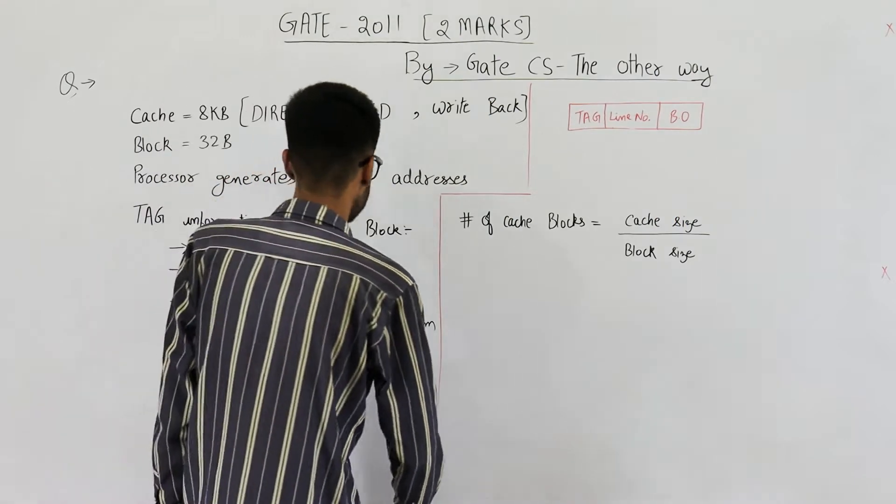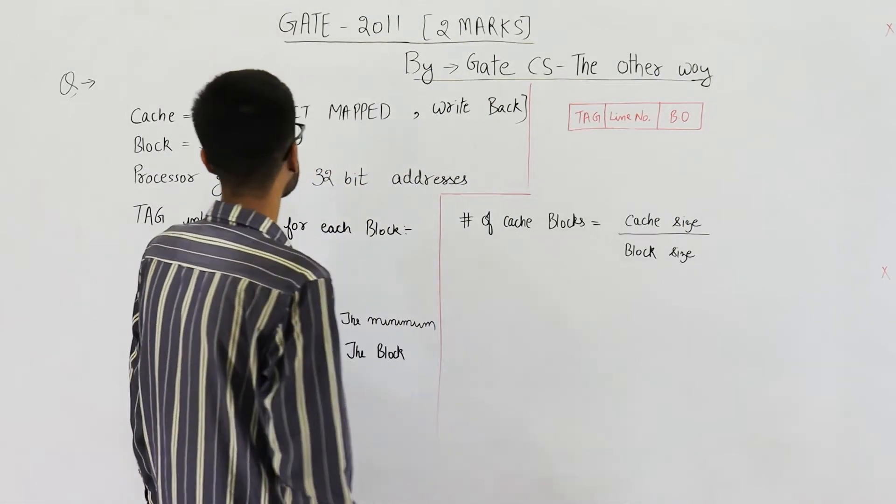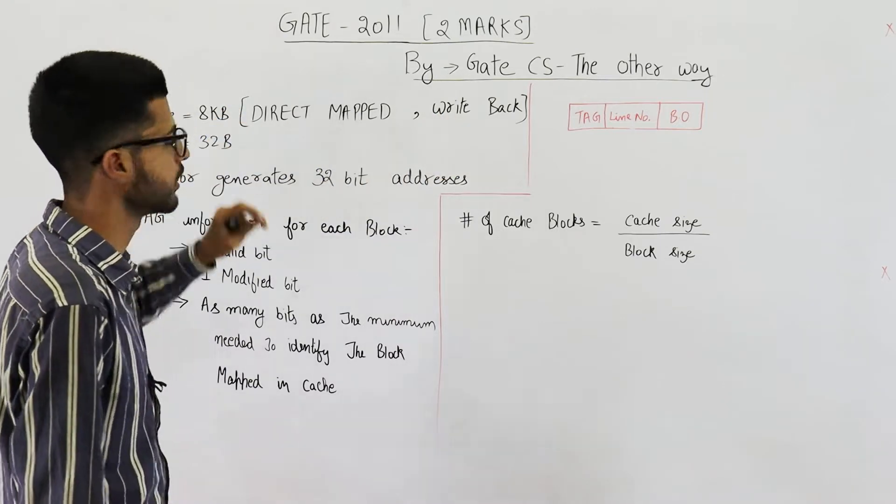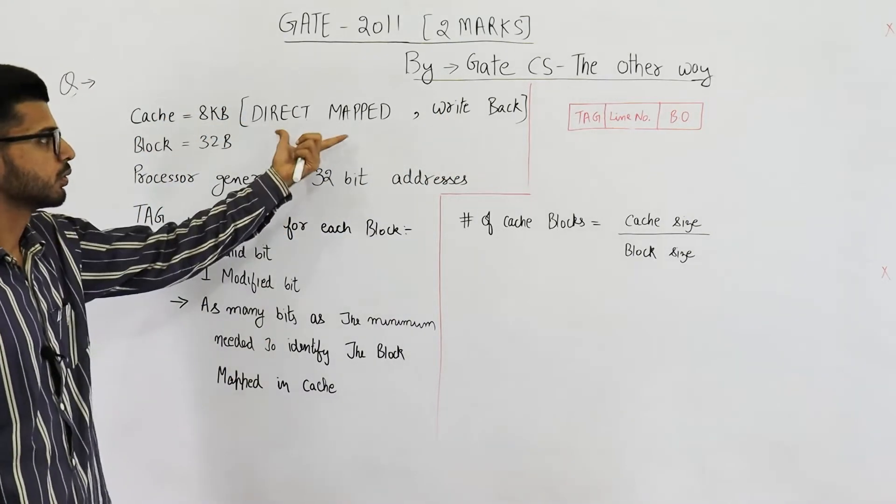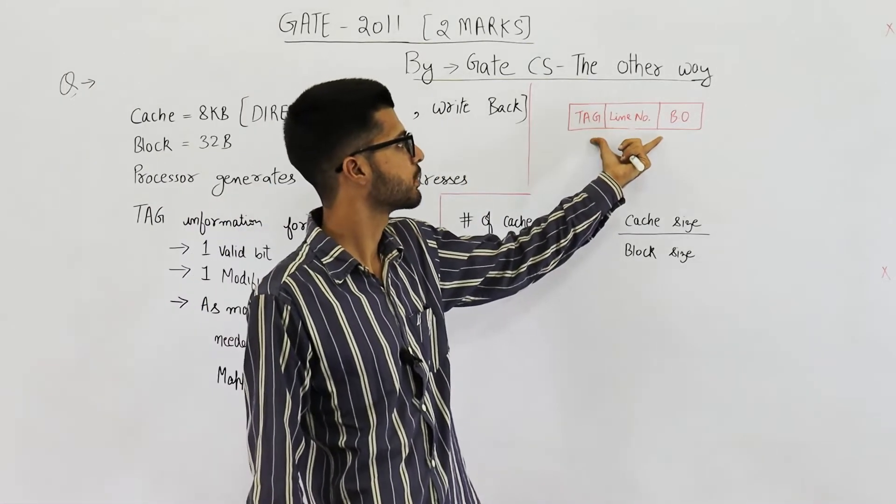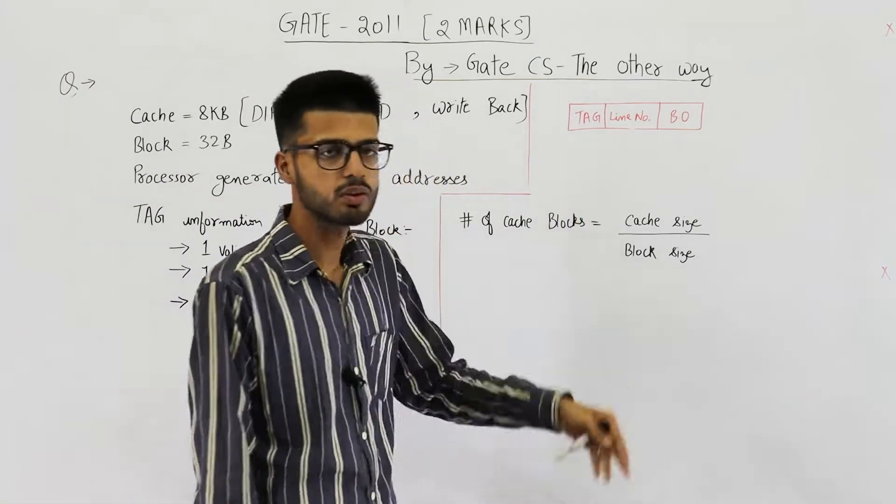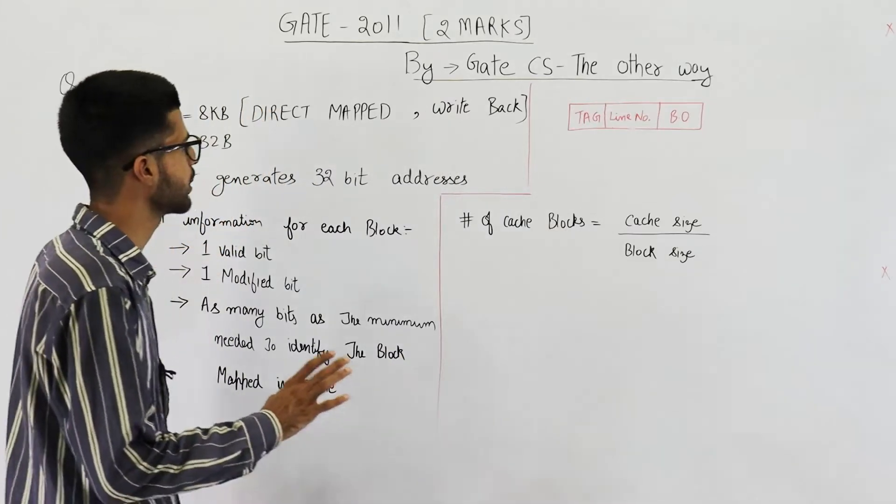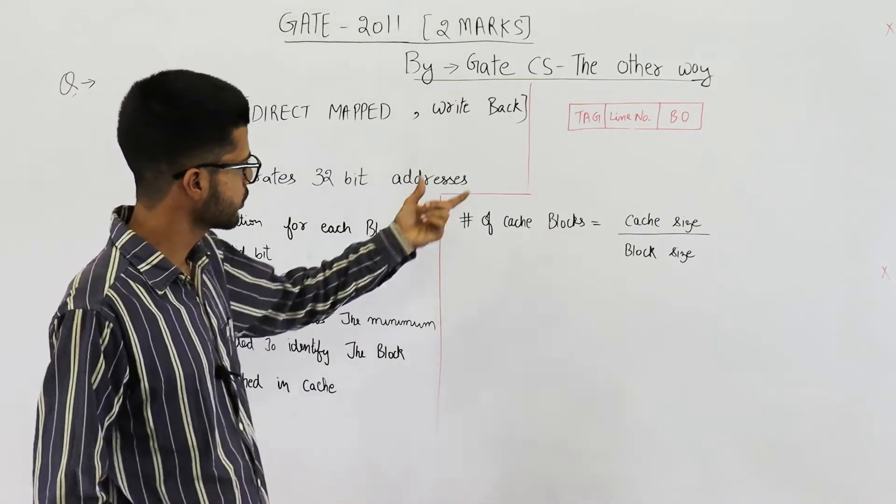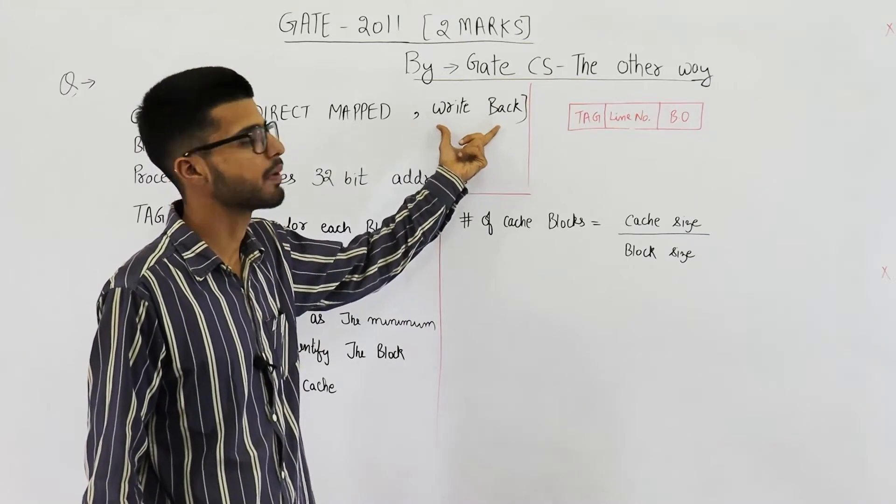Okay, so they are saying you have a direct mapped writeback cache of 8KB. You know what is direct mapped - that means our physical address is split into three fields. We have discussed direct mapping in great detail in our theory lectures. I've also discussed this topic writeback cache.